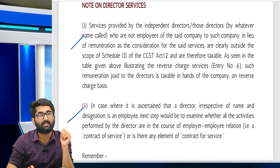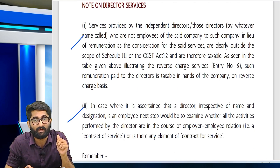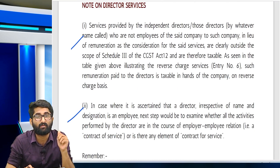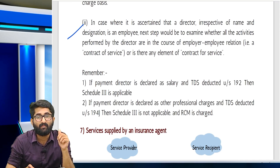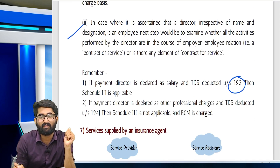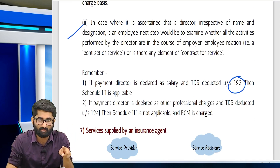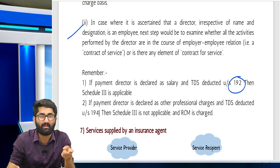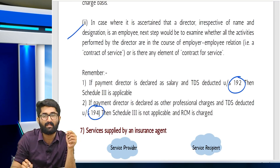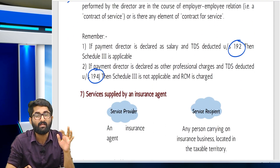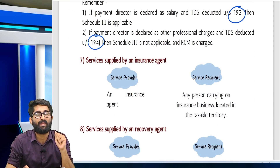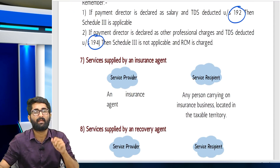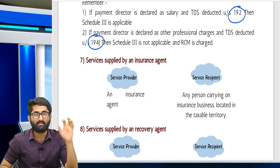Regarding sections 192 and 194J: if TDS has happened under section 192, then Schedule 3 is applicable (no supply). If it is under section 194J, then Schedule 3 is not applicable and RCM applies.